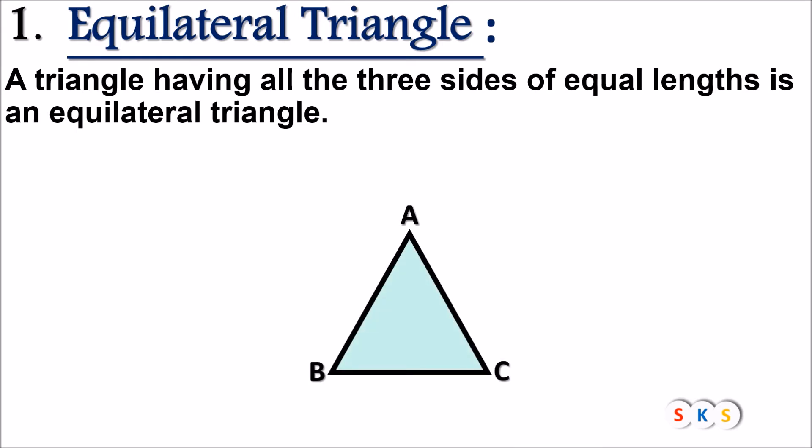Look at this triangle. Here seg AB is 6 cm, seg BC is 6 cm, seg AC is 6 cm. So here all sides have equal length. Therefore this triangle is known as equilateral triangle.